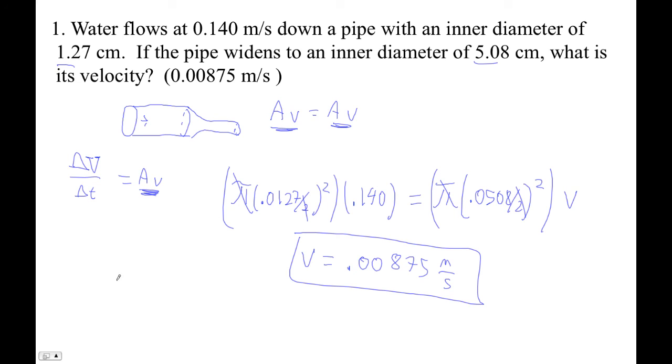So the way I set these things up in my mind as I do this, I go 1.27 squared. That represents the area, times 0.14 equals 5.08 squared times V. That's a proxy for the area.